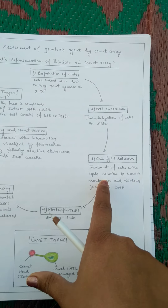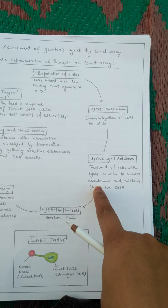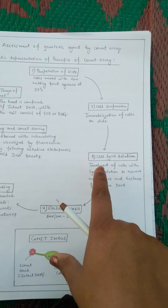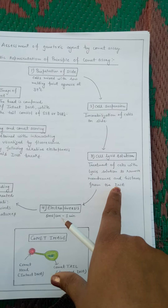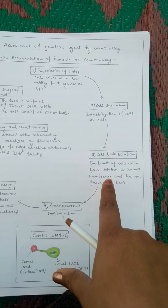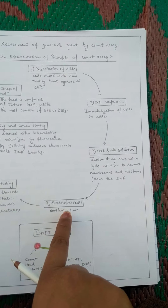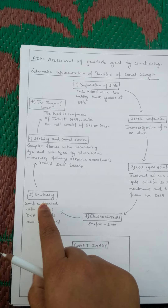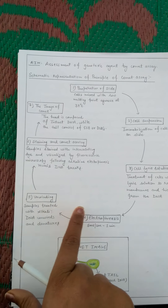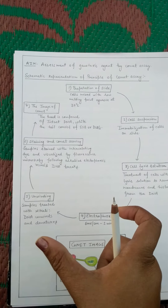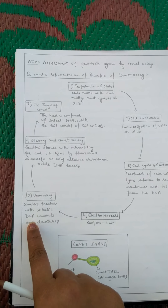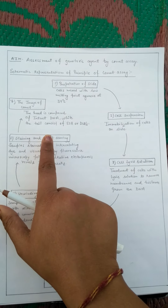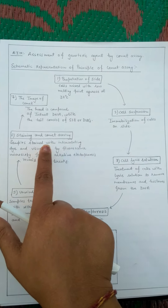After this, the microscopic slide undergoes lysis using a lysis solution, so that any membrane or histones from the DNA are removed. The lysis solution removes membranes and histones from the DNA easily. After that, we proceed to electrophoresis at 5 millivolts per centimeter for one minute. After electrophoresis, the sample is treated with alkali so the DNA unwinds and denatures, becoming single-stranded.